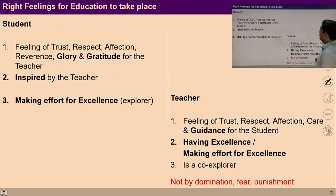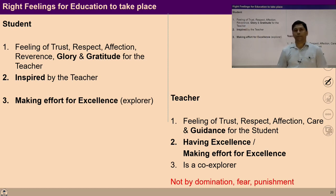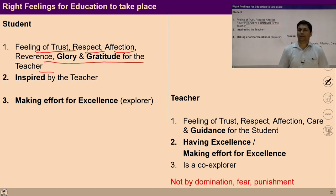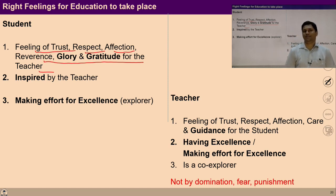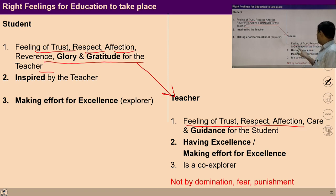What is required in both student and teacher for successful teaching — so that a child can receive things as they are? From the perspective of the student, feelings of trust, respect, affection, reverence, glory, and gratitude for the teacher are required. From the context of the teacher, feelings of trust, respect, affection, care, and guidance towards the student are required.